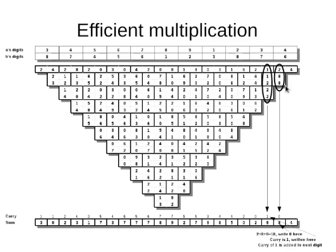Then I add up the next column: two plus eight is ten, plus eight is eighteen. I'll write the eighteen like that — there's the eight and the one carry, written over there. Next column: one plus one is two, and two is four, and two is six, and two is eight. Plus the carry is nine. And zero carry for the next column.